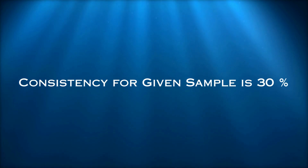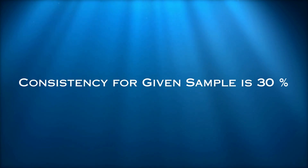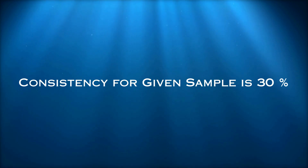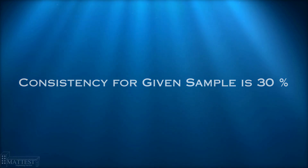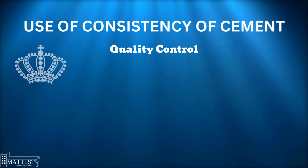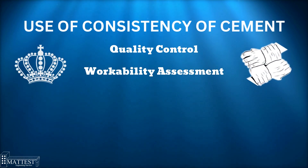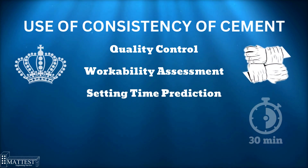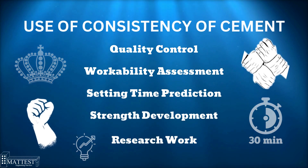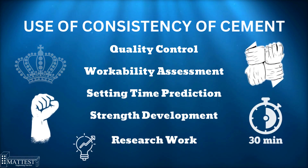For this cement sample, we added 120 milliliters of water and the result shows 6 millimeters of penetration. Therefore, we can say the consistency is 30% of the given sample. The uses of this test include quality control, workability assessment, setting time prediction, strength development evaluation, and research work.